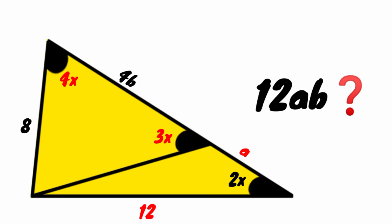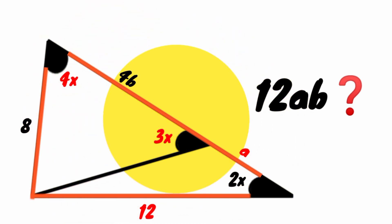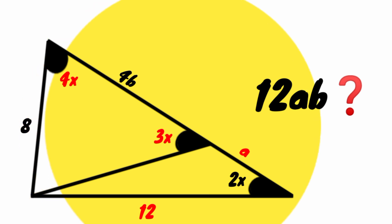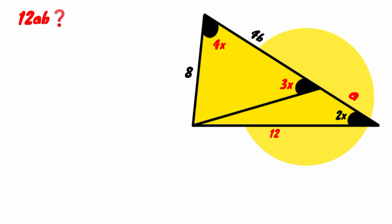Hi friends, you are welcome back to another interesting question. We have a triangle whose sides are of given length 8 units, 12 units, and this side divided into 4b and a. We are given angles of sizes 2x, 3x and 4x. We are to determine the value of 12ab. How are we going to calculate 12ab?